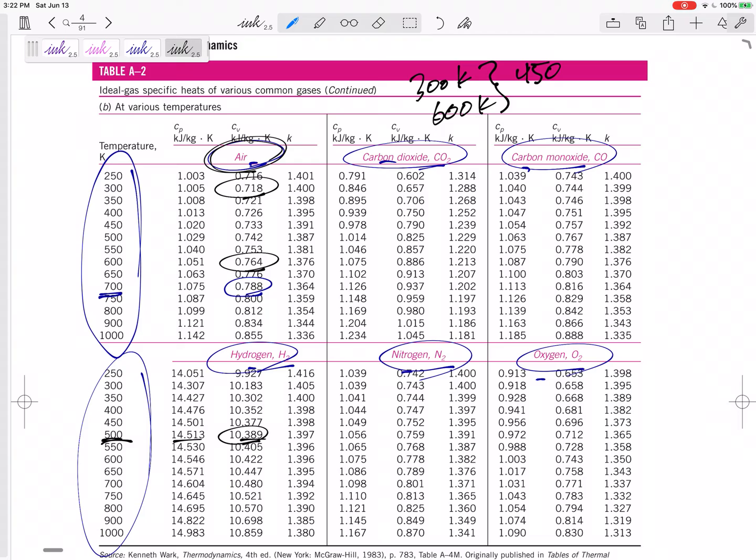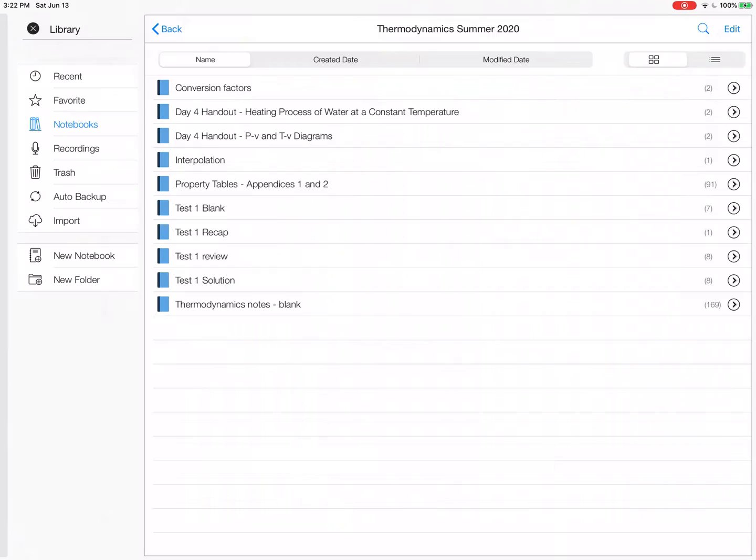Let me just do that. Let me use the value at 450. Use the value at 450. 0.733 is CV right there.